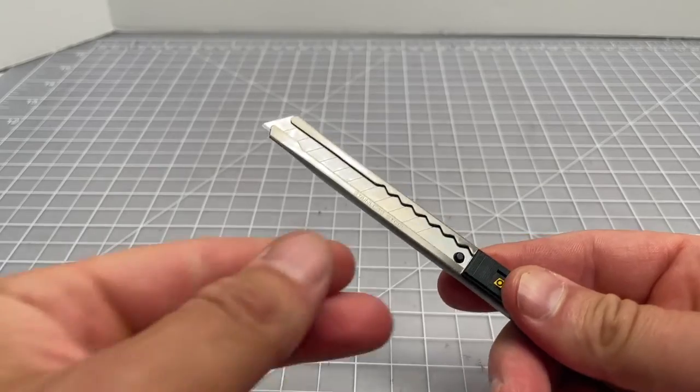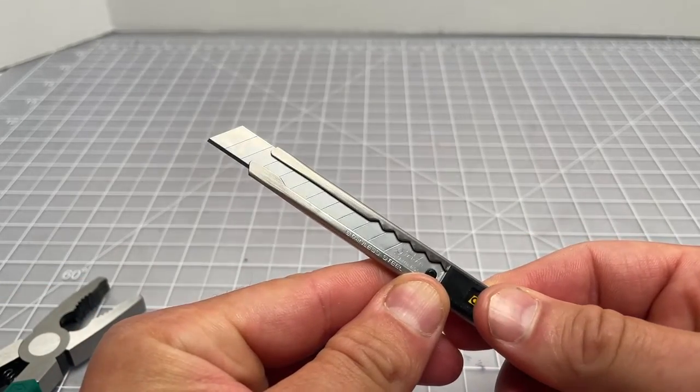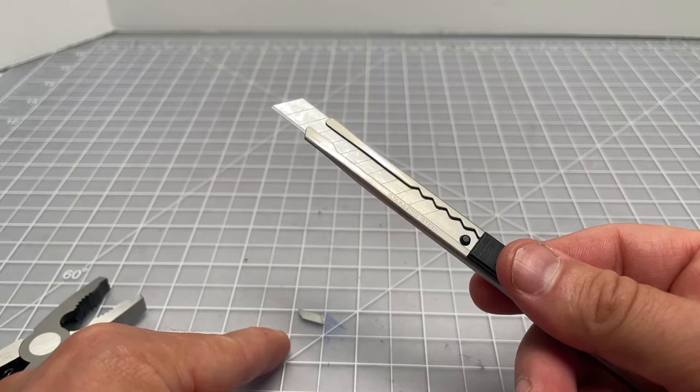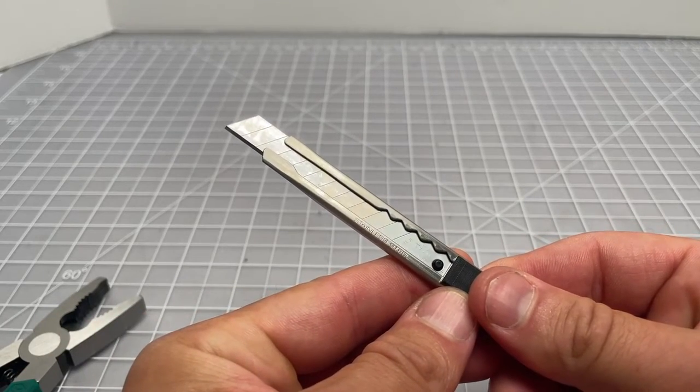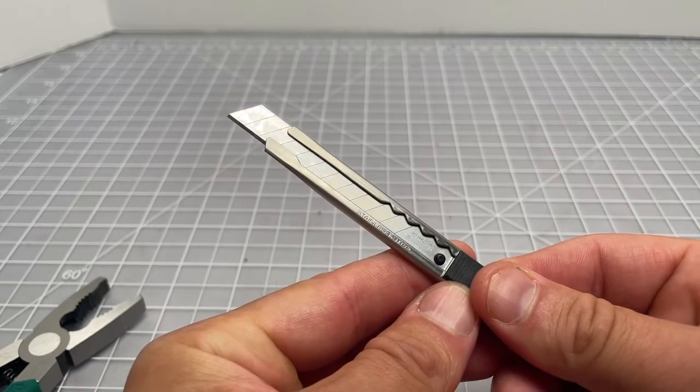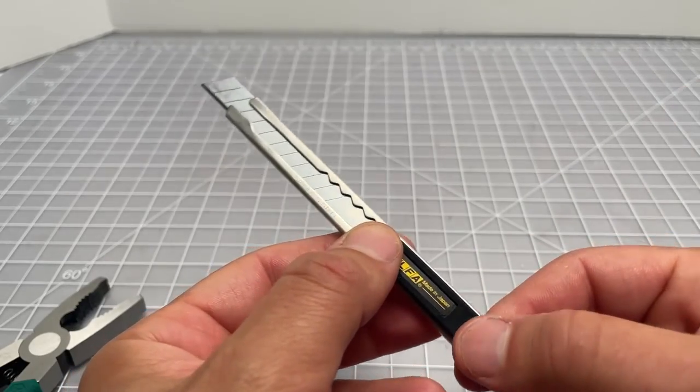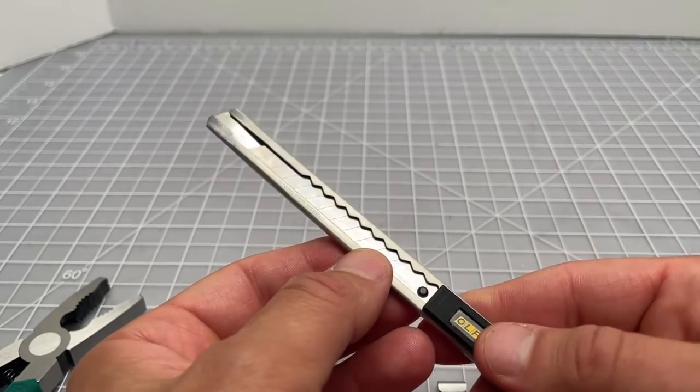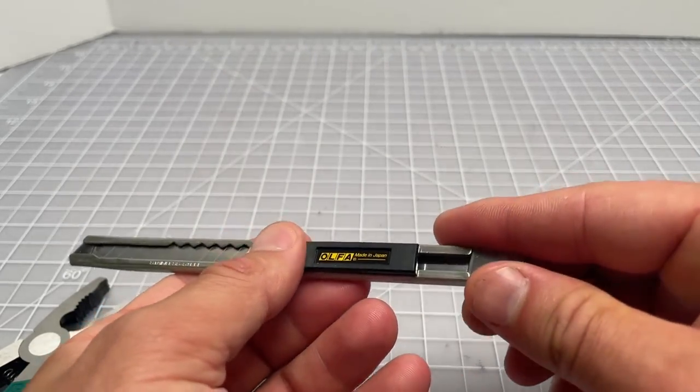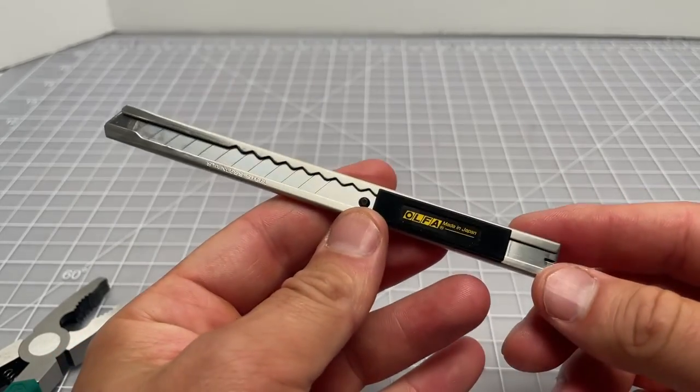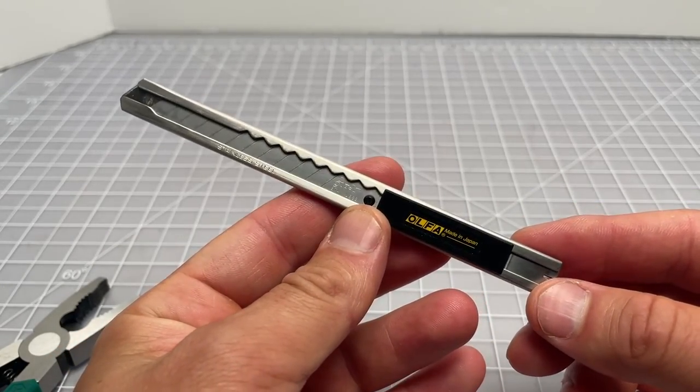There you go, did a quick snap. New blade is there, the old one is right there. You want to be really careful with that. Dispose of it safely, hopefully in a sharps container or something like that. Put this back, put the clip back in place, and now it's fully snapped off and you're ready to go.